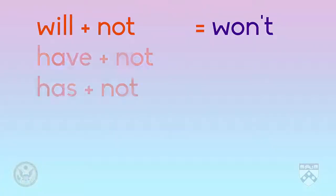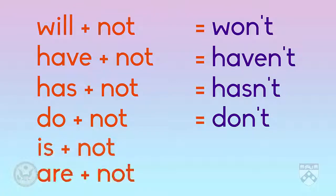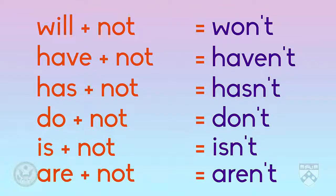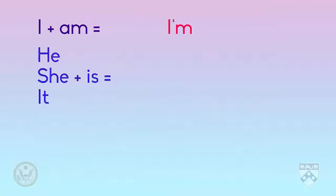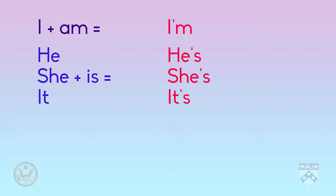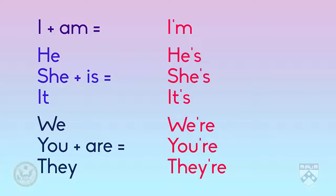So, will not becomes won't. Have not and has not become haven't and hasn't. Do not is don't. And is not and are not become isn't and aren't. For the verb to be: I am becomes I'm; he is, she is, and it is become he's, she's, and it's. And finally, we are, you are, and they are are spoken as we're, you're, and they're.